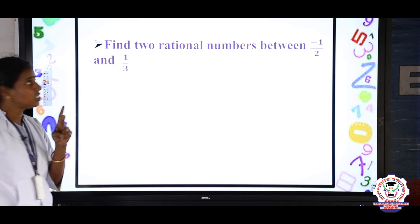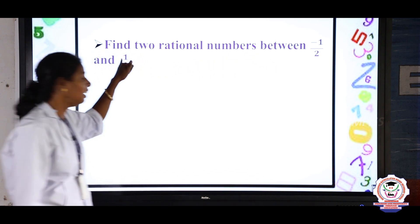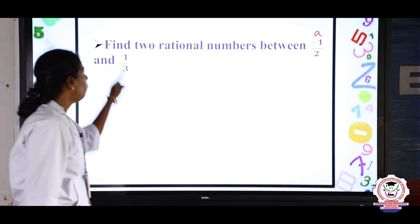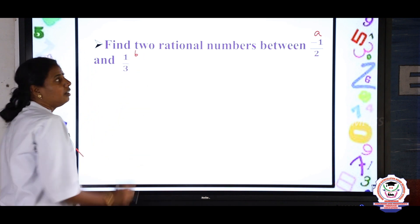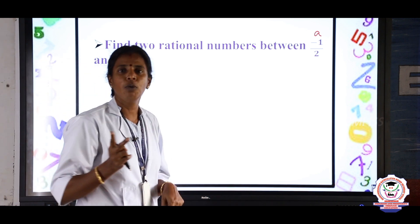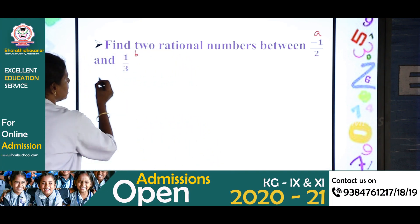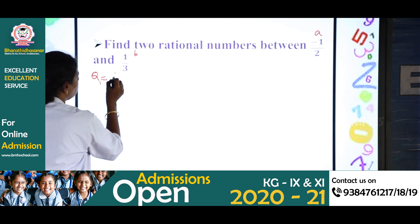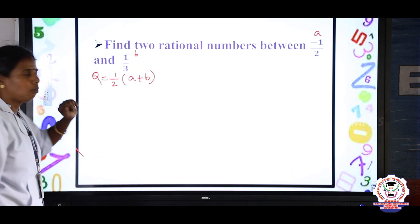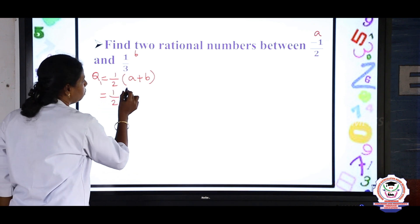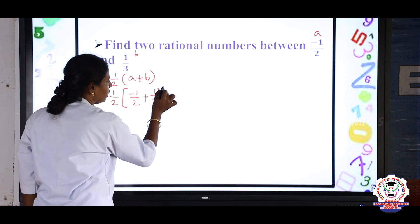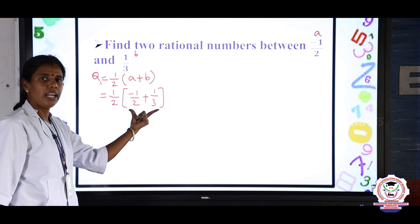The next question: find 2 rational numbers between minus 1/2 and 1/3. We consider A = minus 1/2 and B = 1/3. We are going to find Q1 and Q2. The formula is Q1 = 1/2 × (A + B). Substituting: Q1 = 1/2 × (minus 1/2 + 1/3). We need to solve these 2 rational numbers first.